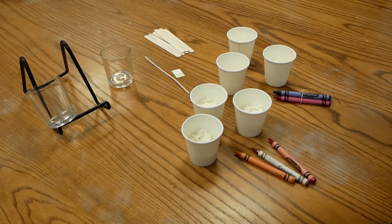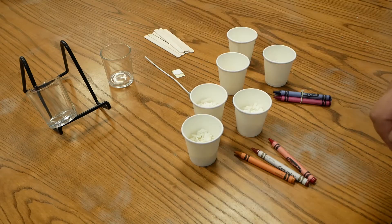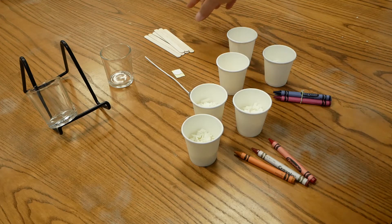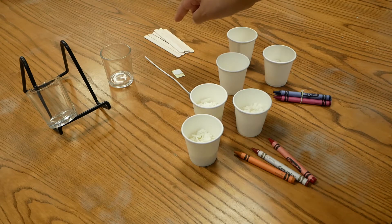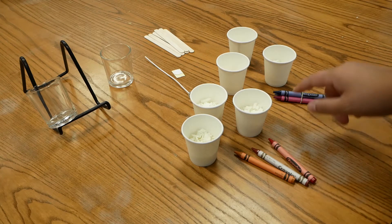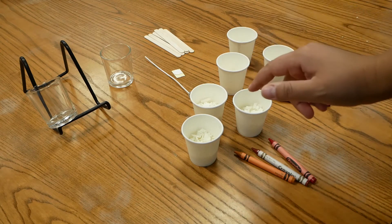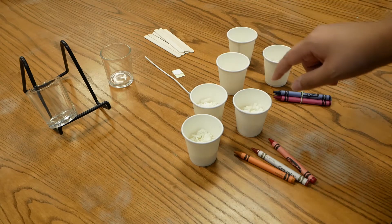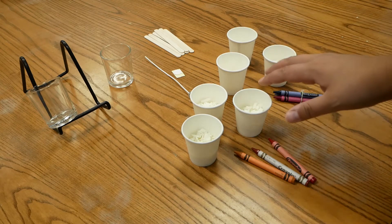In your kit you'll find two of the glass votives, two wicks, two stickers, six popsicle sticks, and two sets of crayons, so three each. I've already done the separation of the package of wax into the six cups.